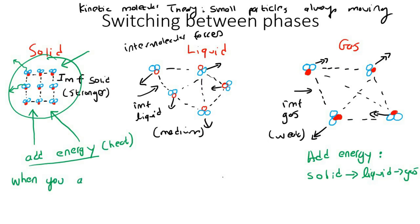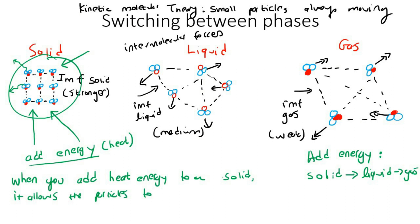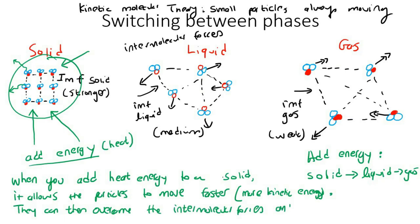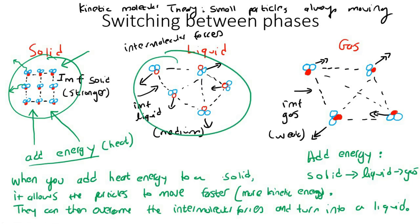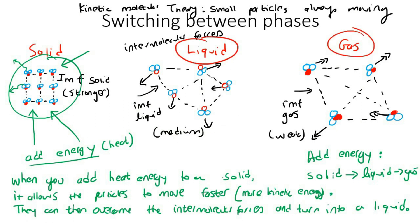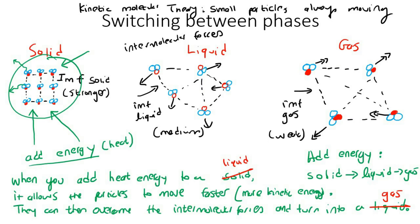Let's write a summary: when you add heat energy to a solid, it allows the particles to move faster — they have more kinetic energy — and they can overcome the intermolecular forces and turn into a liquid. Similarly, when you add heat energy to a liquid, it allows the particles to move faster, they overcome the intermolecular forces, and turn into a gas. Adding energy takes you from solid to liquid to gas.